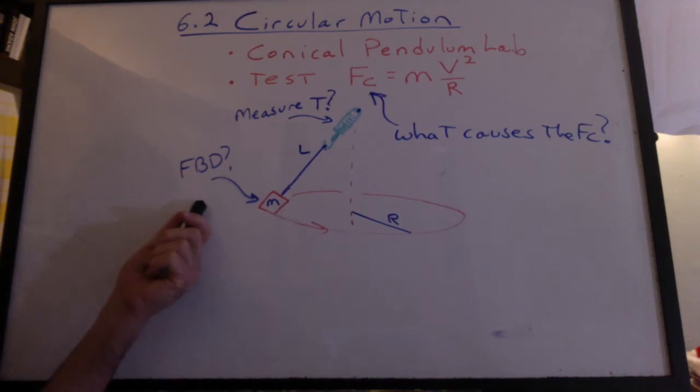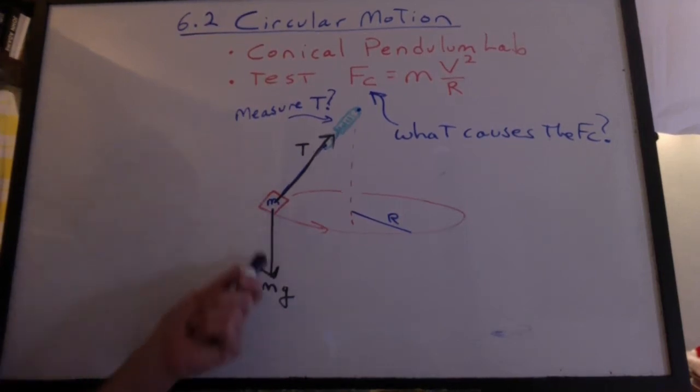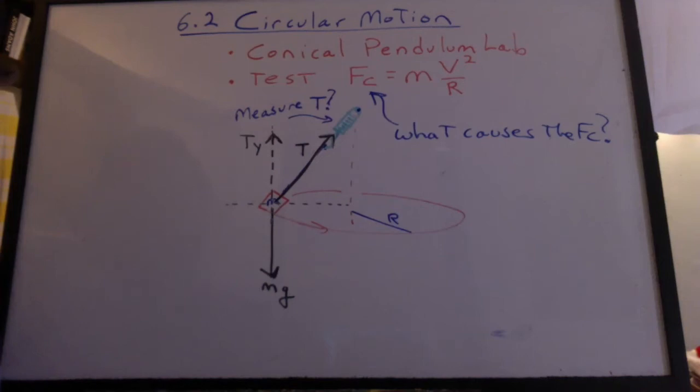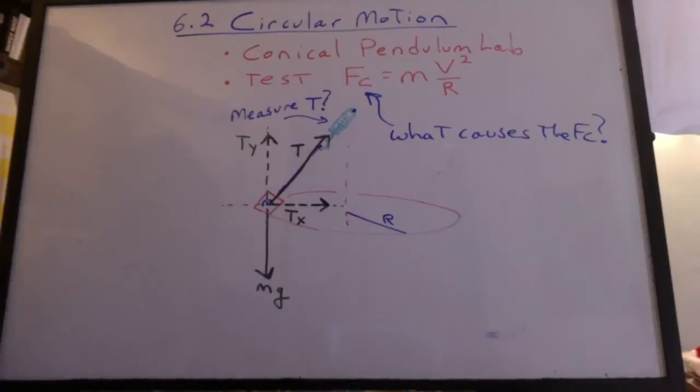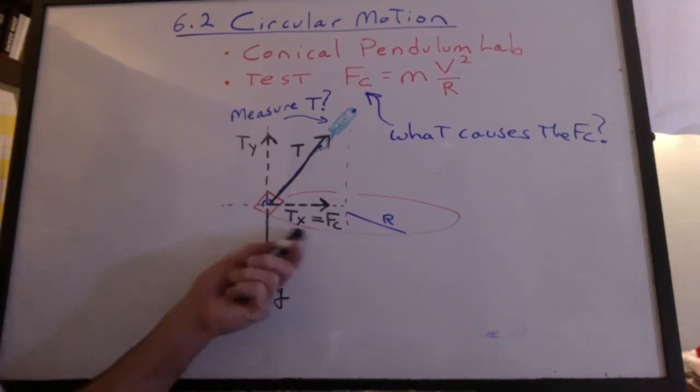Did you draw a free body diagram? You know mg goes down, the string produces the tension, and that's it. Those are the only two forces acting on the object. Now ask yourself, does the weight rise? Does it fall? No it doesn't. So that means something's got to stop mg from going down. It's going to be the y component of the tension in the string. And of course that leaves us with an x component of the tension in the string. Look where that's pointing. Yeah that's what's producing the Fc.